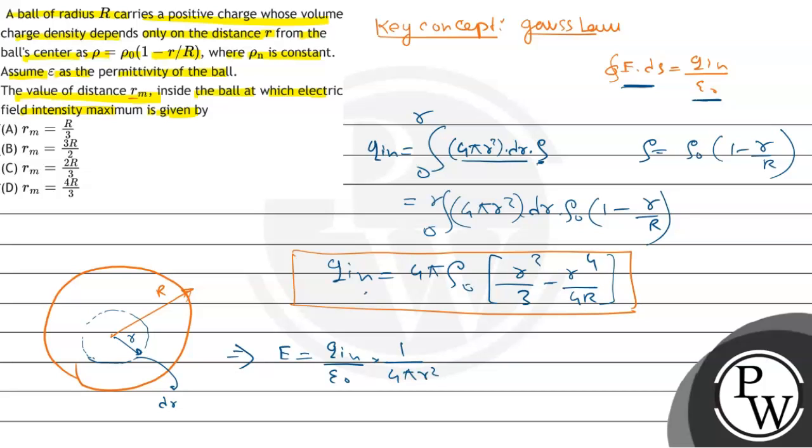So now put the value of q_in in this expression. We get E equals ρ₀/ε₀ times (r/3 - r²/4R).